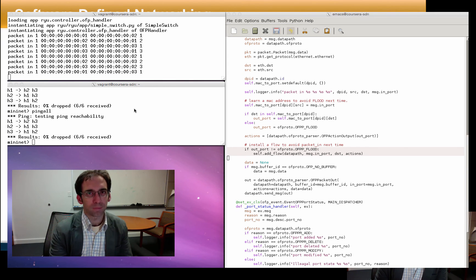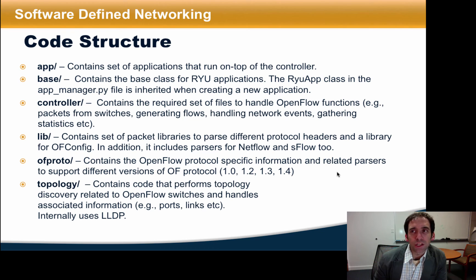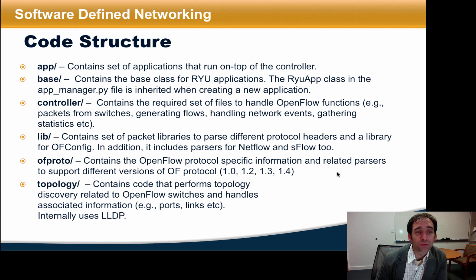Here's an overview of the code structure of the Ryu codebase. When you look at the Ryu codebase, you'll see many different sub-directories. App contains the set of applications that run on top of the controller. Base contains the base class for Ryu applications, in particular the Ryu app class, which is inherited when creating a new application. Controller contains the required set of files to handle OpenFlow functions, such as packets from switches, network events, and so forth. Lib contains the set of packet libraries to parse different protocol headers and a library for OFConfig, as well as libraries for parsing NetFlow and SFlow. OFProto contains the OpenFlow protocol specification and related parsers. And Topology contains code that performs topology discovery related to OpenFlow switches.